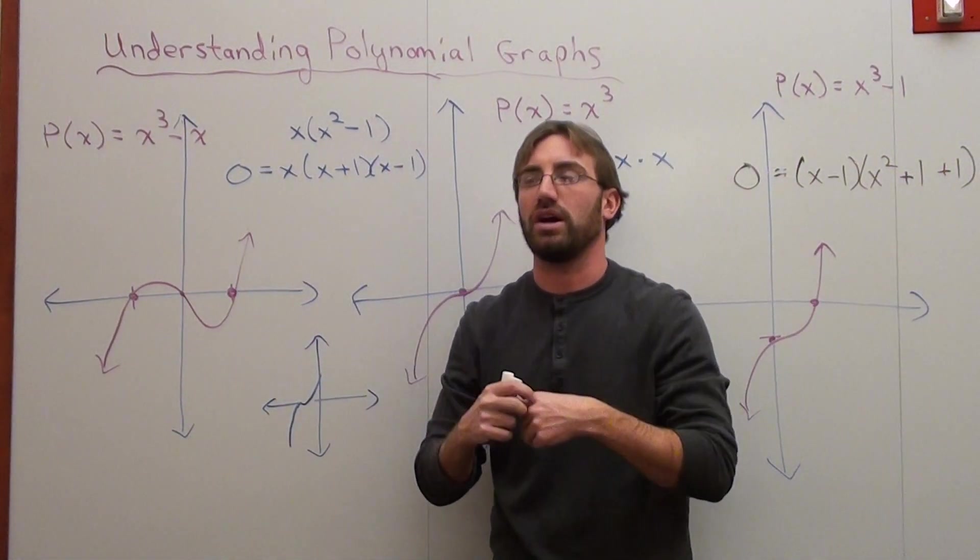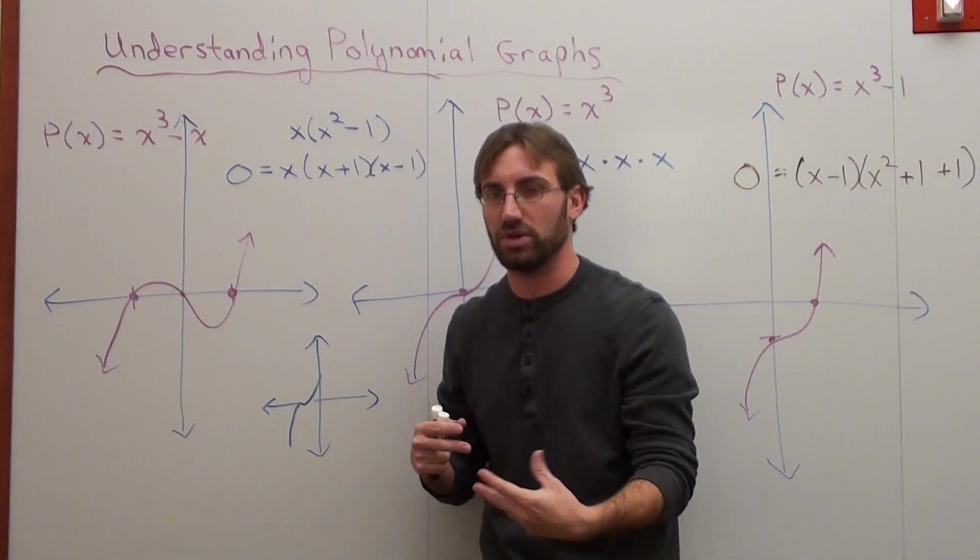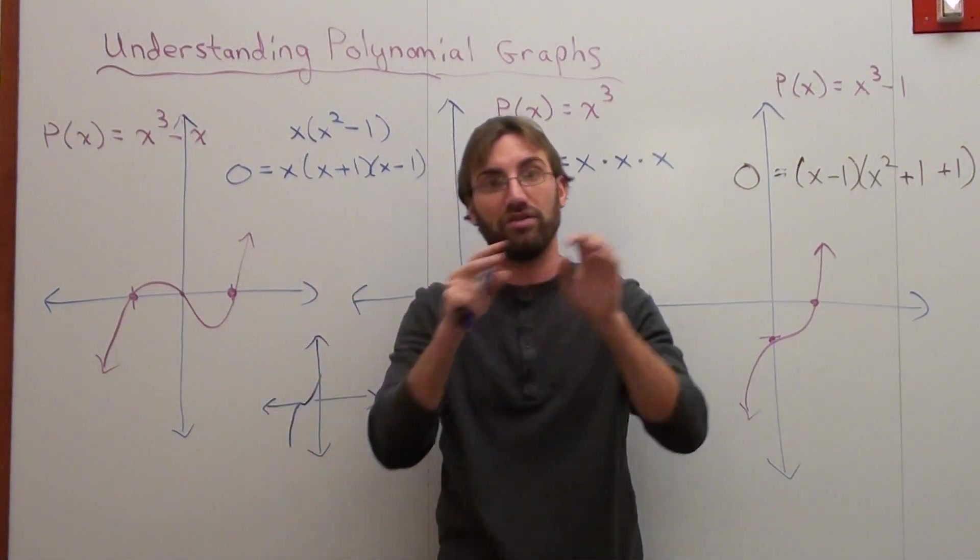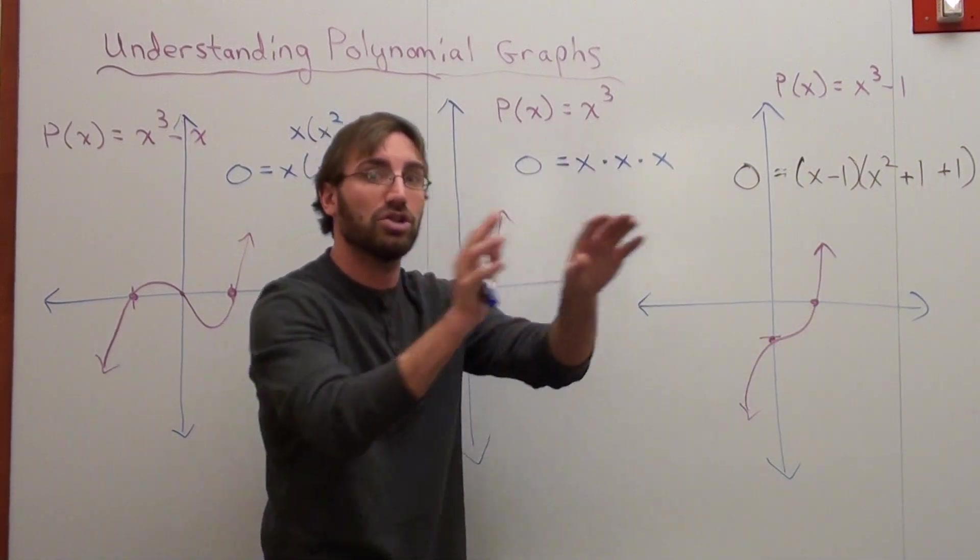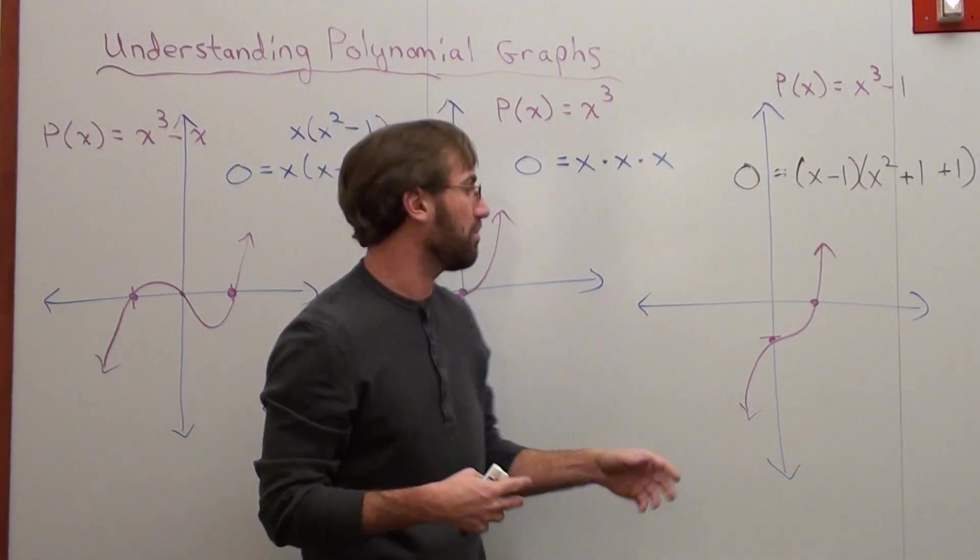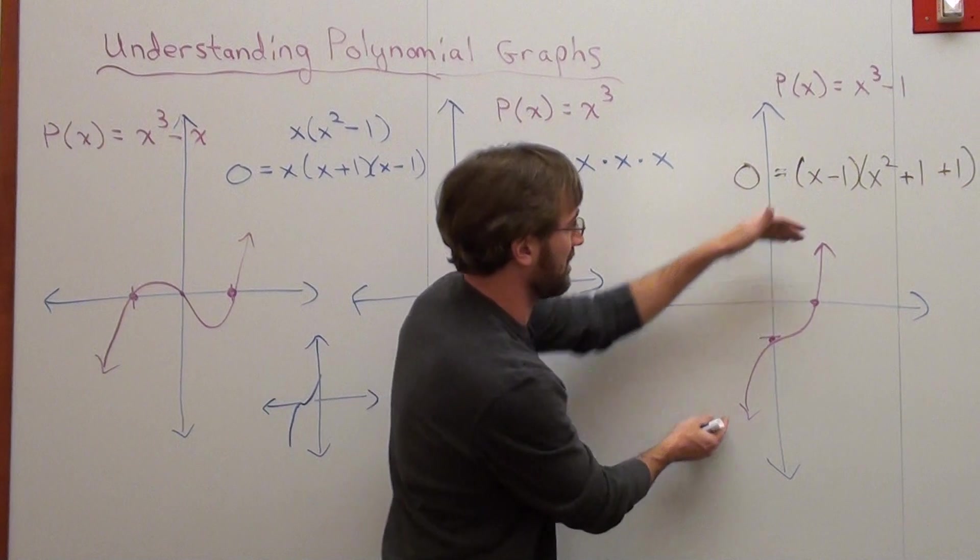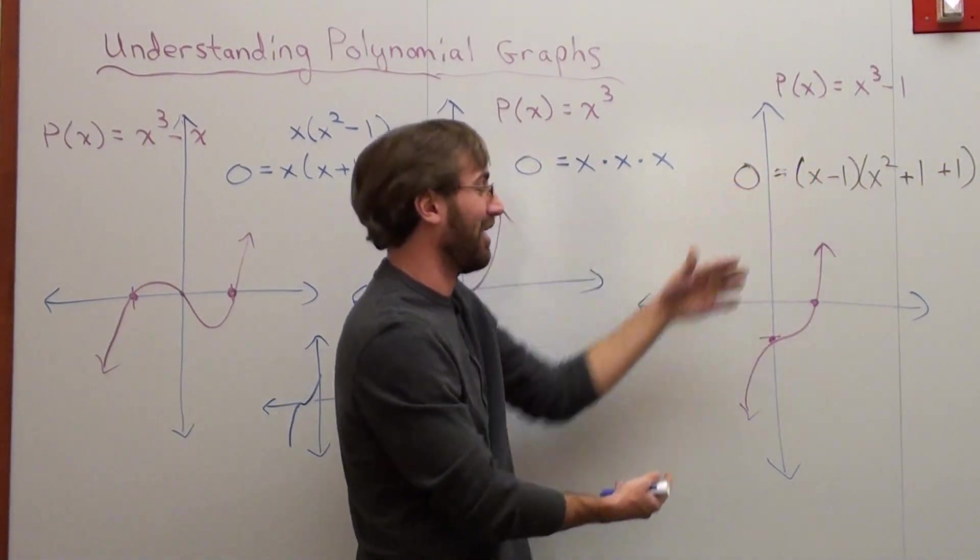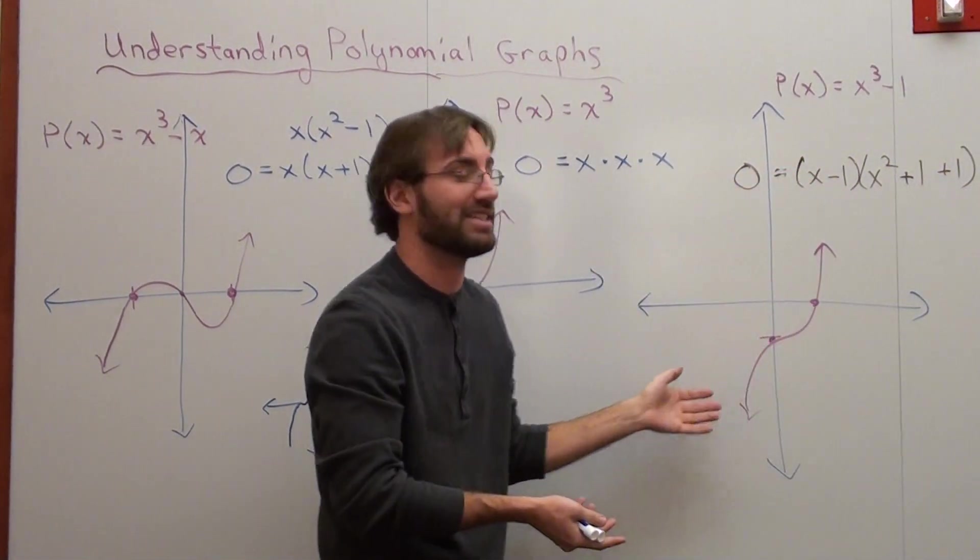It can only have one zero. It goes from three to one. And it can't have zero because it has to cross the x-axis, because if one arrow goes one way and one arrow goes the other way, I guarantee it's going to hit the x-axis at some point.